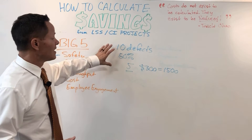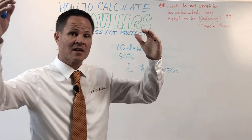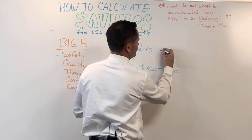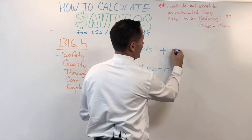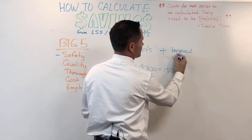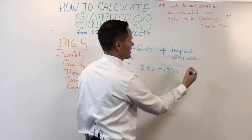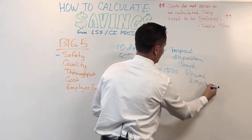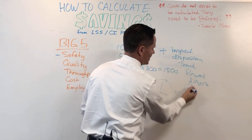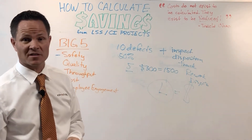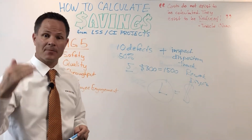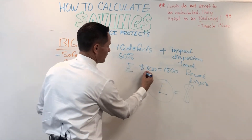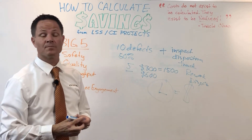A lot of people will just use the unit cost, but there's actually a much higher cost to quality problems. It's not just the defect — you have to add the lost productivity from people who have to inspect, disposition the part, track it, rework it, or dispose of it. All of that costs time and money. So those five parts at $300 each are actually probably more like $600 each — it's much more expensive than you think.